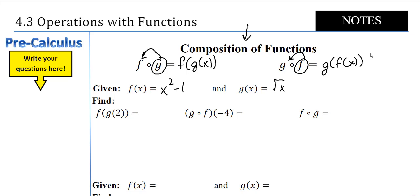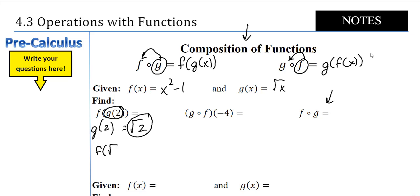We'll start talking about domains as we go. So these are the two given functions, and I want to find F of G of 2. F of G of 2 means I take the inside piece, which is G of 2. G of 2 is just the square root of 2. Then I plug that into F: it's the square root of 2 squared minus 1. When I square a square root I get what's inside, so two minus one equals one. So F of G of 2 equals 1.